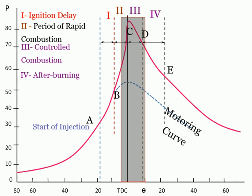The second stage of uncontrolled combustion is followed by the third stage, that is controlled combustion. At the end of the second stage, the temperature and pressure inside the combustion chamber are so high that the fuel droplets injected during the last stage burn almost as they enter, and any further pressure rise can be controlled by the injection rate.